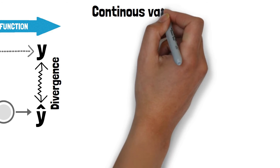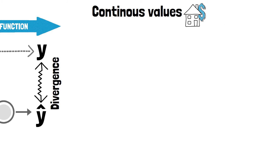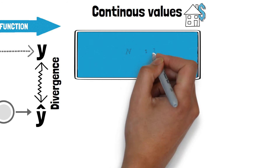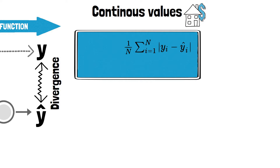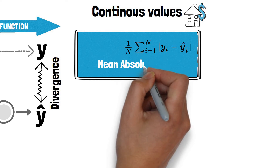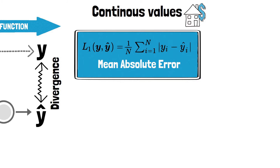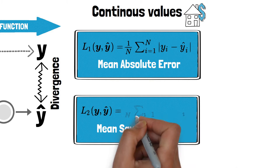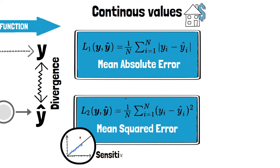When we are predicting continuous values, such as the price of a house, we can calculate the error as the mean difference between the predicted value and the true values — this is called mean absolute error, or L1. We could also use the mean squared error, or L2, which simply squares these differences, and tends to amplify large errors and is more sensitive to outliers.